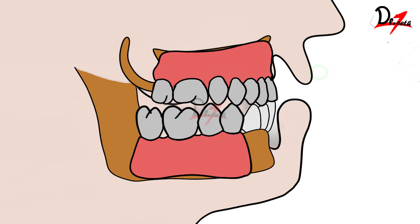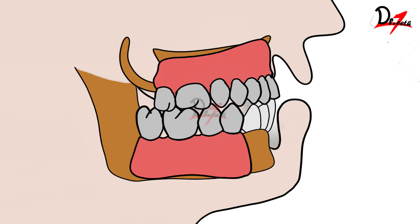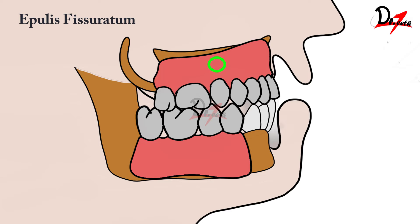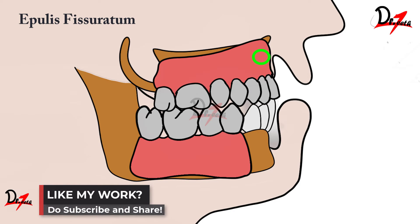Because of this, the occlusal plane will tilt anteriorly — upward anteriorly and downward posteriorly — giving a negative pressure inside the upper denture. Additionally, since the maxilla has resorbed, the labial flanges will impinge on the labial sulcus. Due to this constant irritation, we get something called epulis fissuratum.